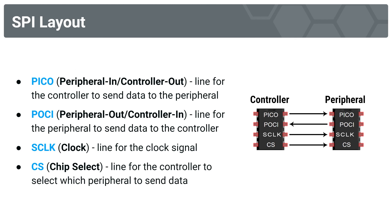We can observe full duplex through the layout of the devices and their pins. We have PICO, which is short for Peripheral In, Controller Out — the line the controller uses to send data to the peripheral. We have the POKEY line, which stands for Peripheral Out, Controller In — the line for the peripheral to output information and send it into the controller.